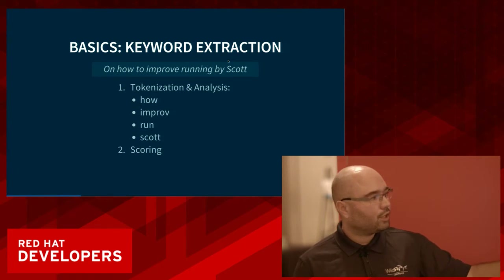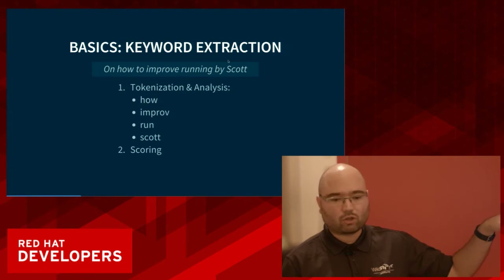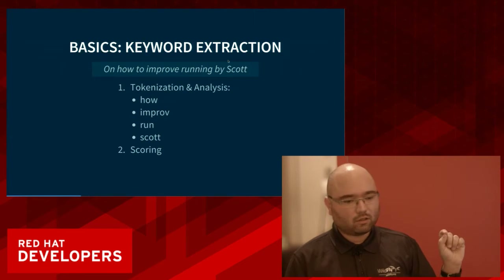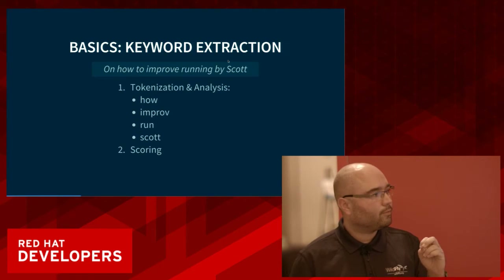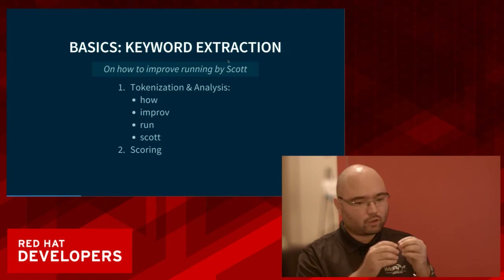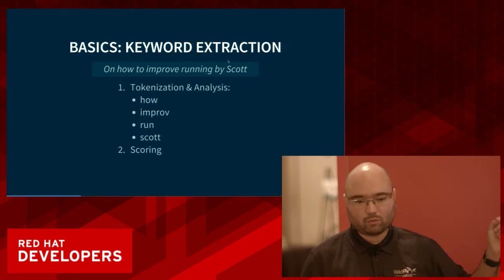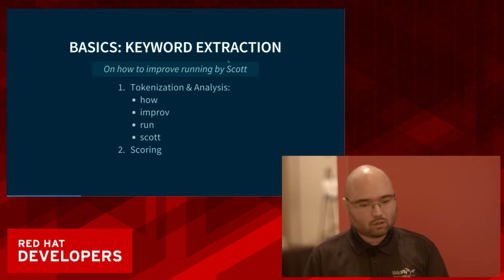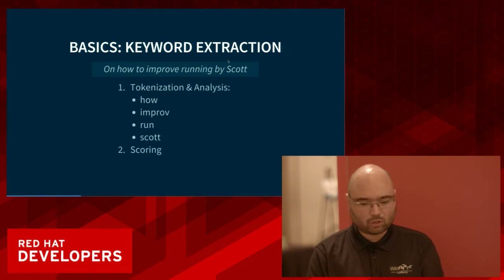Then you go by scoring. Scoring is extremely important because there might be lots of books about running. But 'Scott' is a noun — a first name — so its contribution to the overall scoring is much higher than 'how', which appears in many book titles. So 'Scott' has an important effect on the scoring formula. We'll see more about that later.